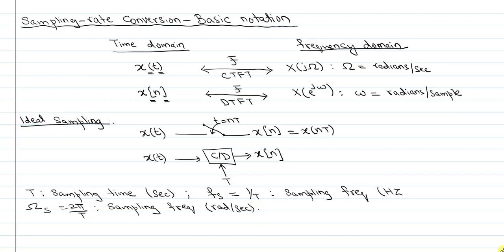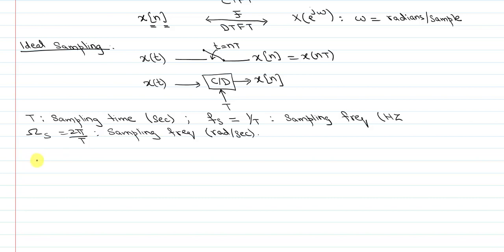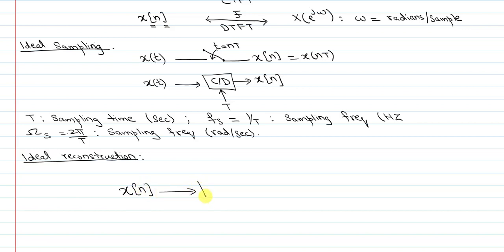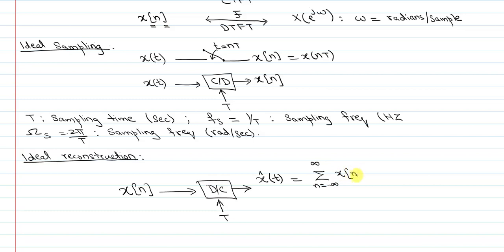Finally, we'll also be using ideal reconstruction in these videos. In terms of notation, ideal reconstruction is written through a block diagram: we take a sample sequence, pass it through an ideal discrete-to-continuous block where T represents the sampling time, and we get X hat of t. That X hat of t represents sinc interpolation, given by a sum from n equals minus infinity to infinity of X of n times...